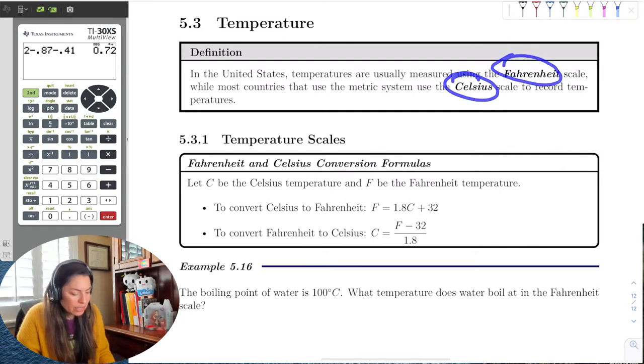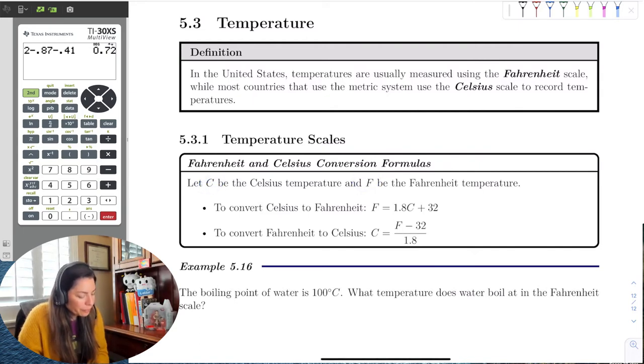The two that we have is Fahrenheit and Celsius. We denote them by a C for Celsius and F for Fahrenheit. If I wanted to convert from Celsius to Fahrenheit, I would just take 1.8 times the Celsius temperature and add 32 to it. But if I wanted to go the other way from Fahrenheit to Celsius, I would just subtract 32 from that Fahrenheit temperature and divide by 1.8.